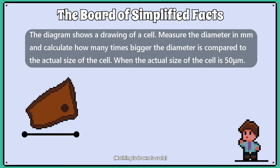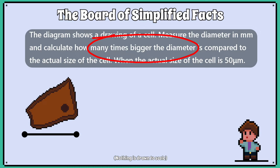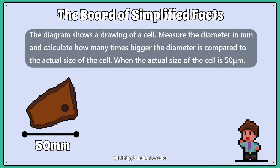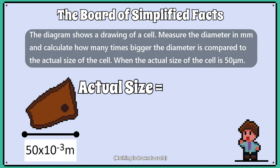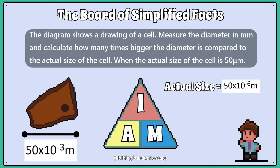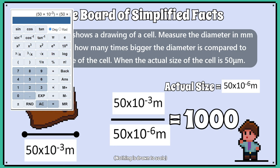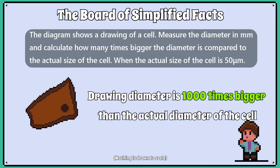Let's do another example. We are given another drawing of a cell and the question gives us the actual size of the cell as 50 micrometres. It asks us to measure the cell in millimetres and work out how much bigger the drawing is compared to the actual size. We measure the picture of the cell and find it is 50 millimetres across. Converting into metres: the drawing is 50 times 10 to the negative 3 metres, and the actual size is 50 times 10 to the negative 6 metres. Using the equation triangle and covering M, we use image size divided by actual size: 50 times 10 to the negative 3 divided by 50 times 10 to the negative 6 equals 1,000. So the drawing is 1,000 times bigger than the actual size of the cell.